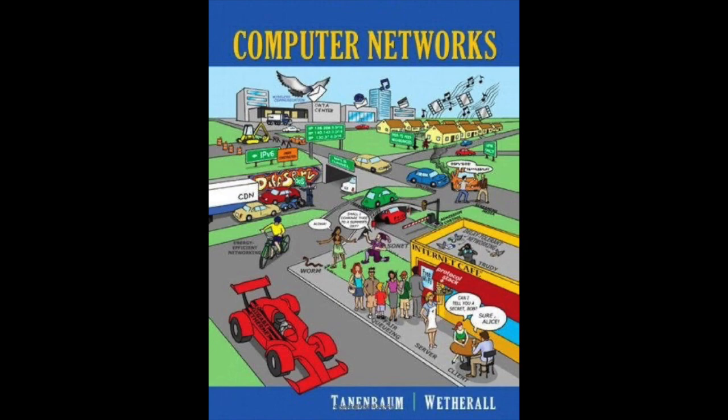The connectionless transport service is also very similar to the connectionless network service. However, it can be difficult to provide a connectionless transport service on top of a connection-oriented network service, since it is inefficient to set up a connection to send a single packet and then tear it down immediately afterwards. The obvious question is: if the transport layer service is so similar to the network layer service, why are there two distinct layers?